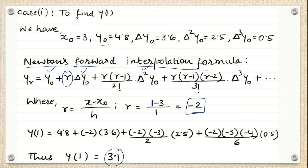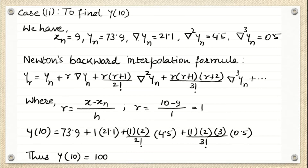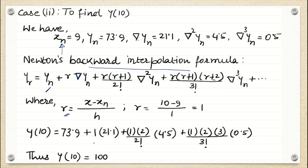The same way, we find y10 but using Newton's backward interpolation formula. For Newton's backward interpolation, a few changes are made: we use xn instead of x naught, yn instead of y0, the downside triangle instead of upside, and the combinations r+1, r+2 accordingly. r is now x minus xn divided by h instead of x minus x naught. Substituting all values, we get y10 equals 100. These questions are called extrapolation questions but they come under interpolation only.